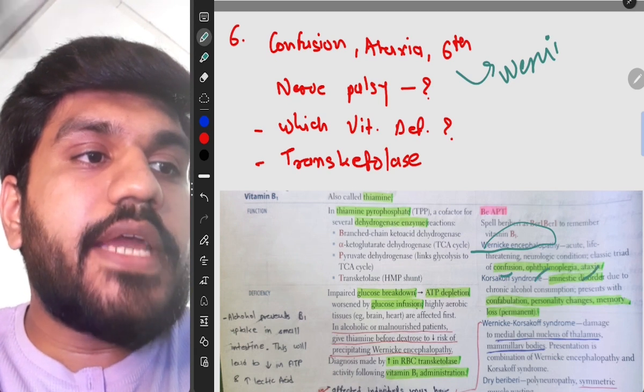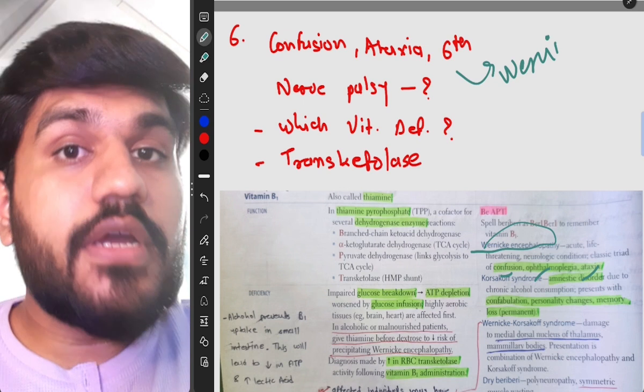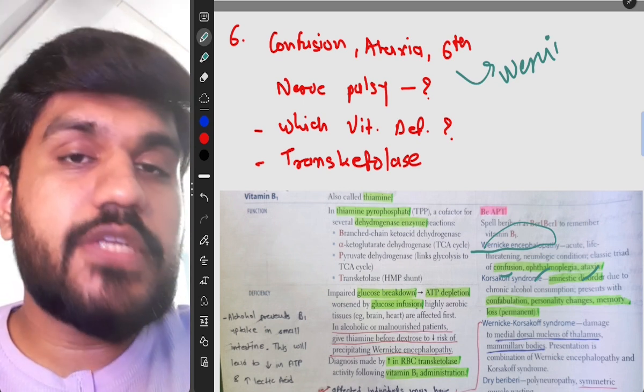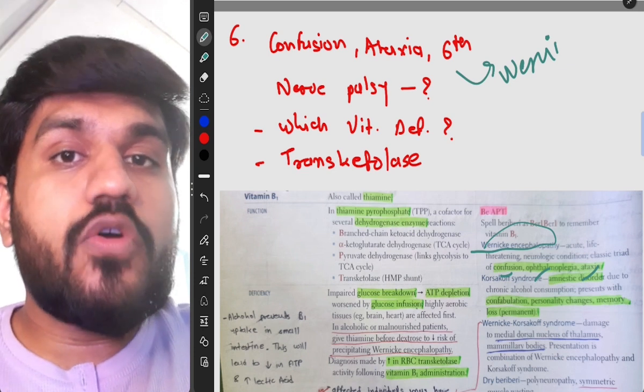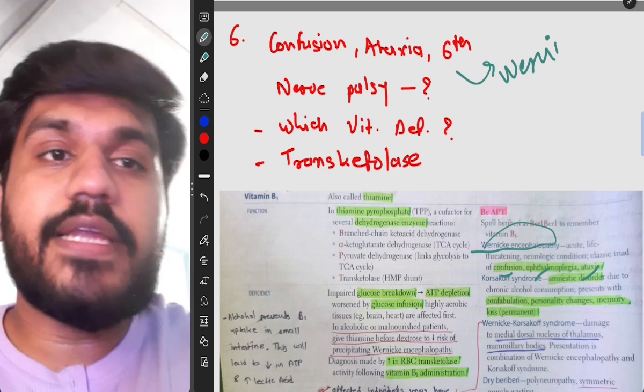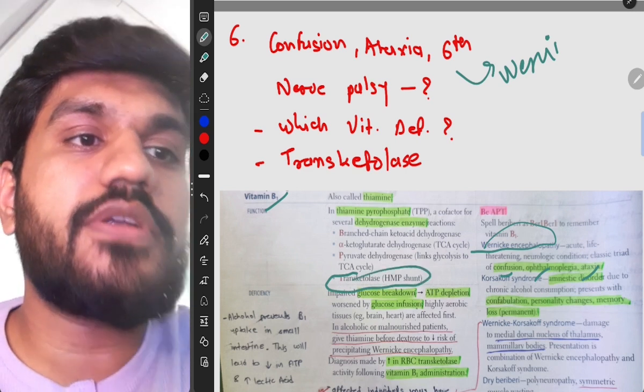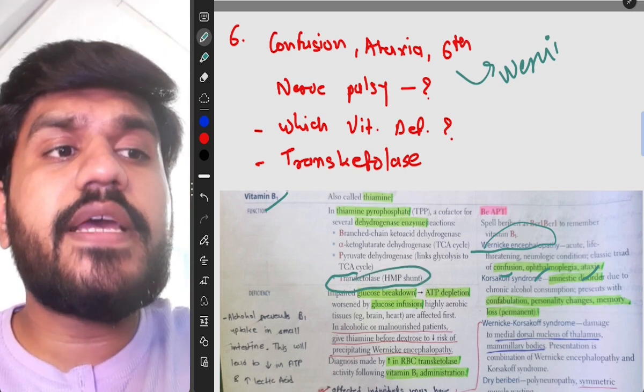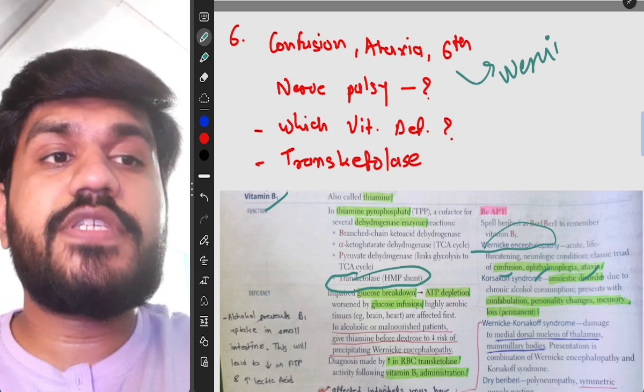As you can see, Wernicke encephalopathy, there are triad of confusion, ophthalmoplegia and ataxia. And there was another question for transketolase. Transketolase is basically used in a patient and which cofactor has role in it, that is vitamin B1 and it is written right here, transketolase in HMP shunt.